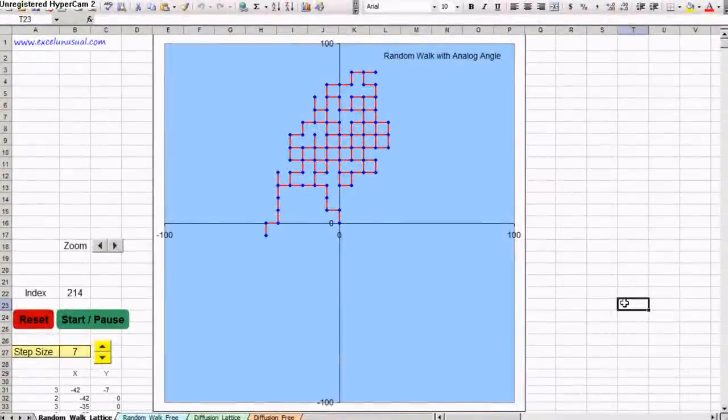This is a diffusion model in Excel and a random walk model. We can also call it Brownian motion because Brownian motion is the random movement of the molecules of a liquid observed through a microscope.